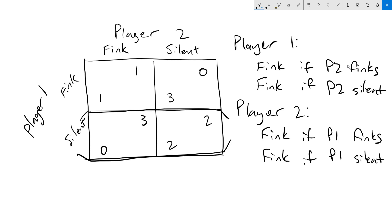So you can see here that we end up with a pretty simple strategy for both players, which is always think — for both player one and for player two. Our best response functions are these two strategies. Player one's best response specifies what they should do for anything that player two will do. Player two's best response specifies what they should do for any player one actions.